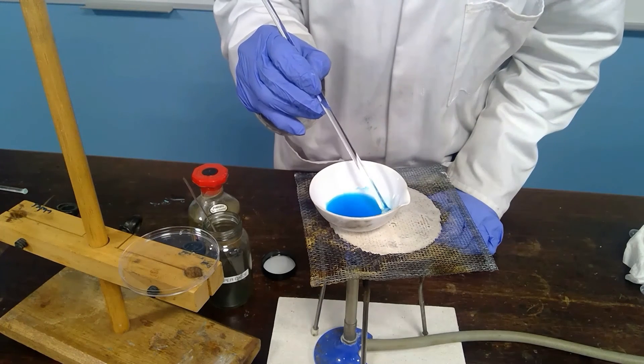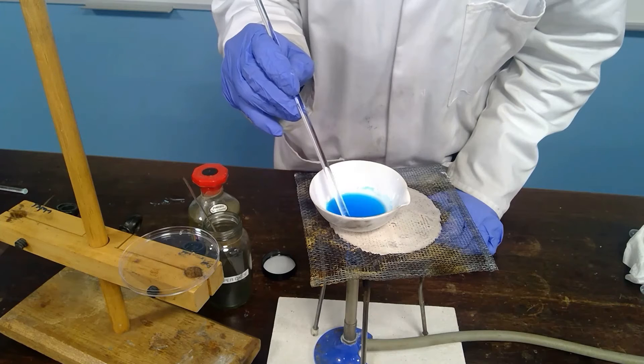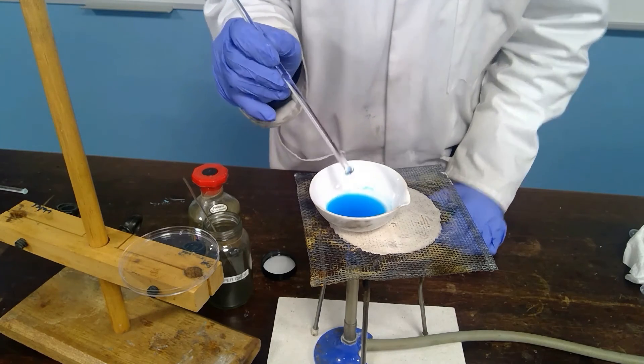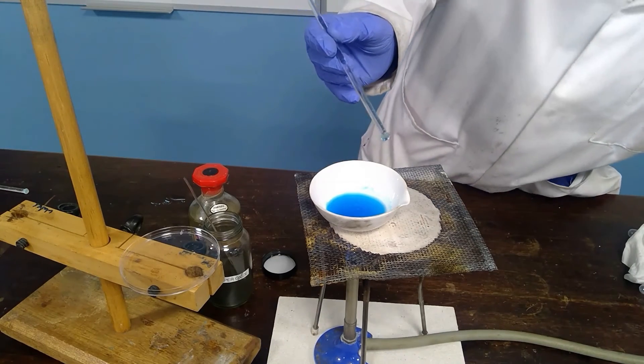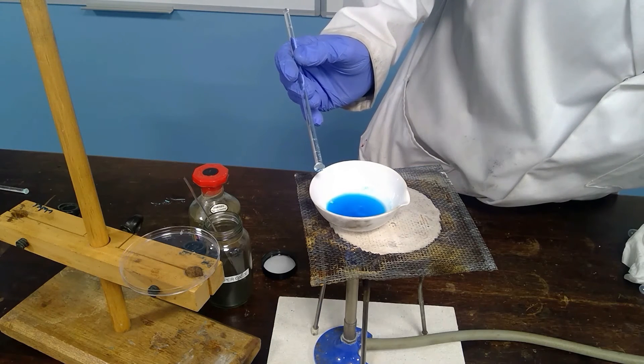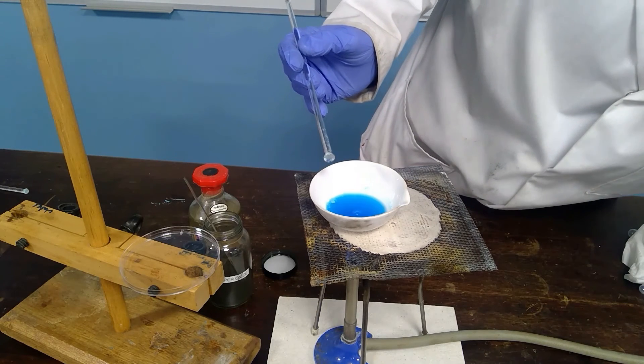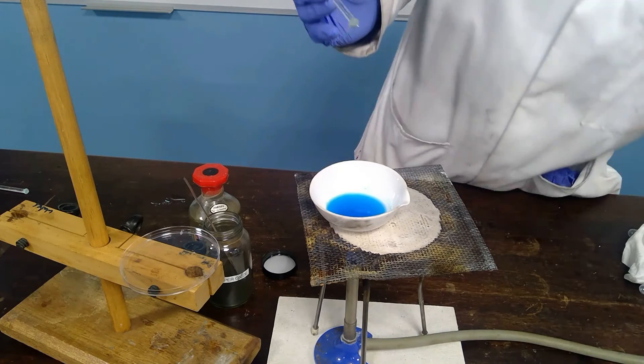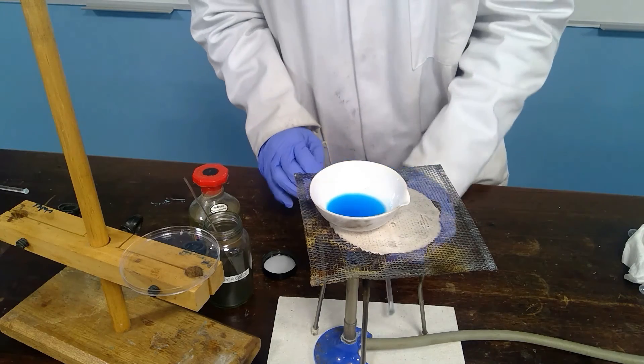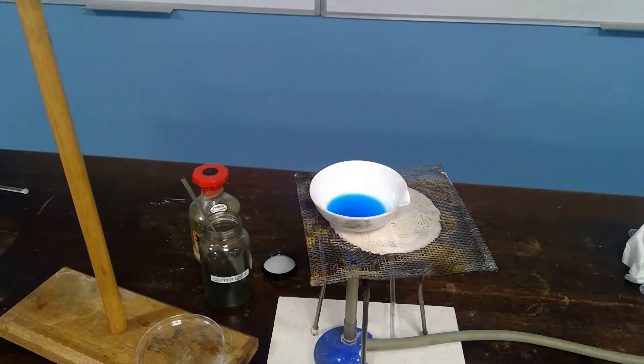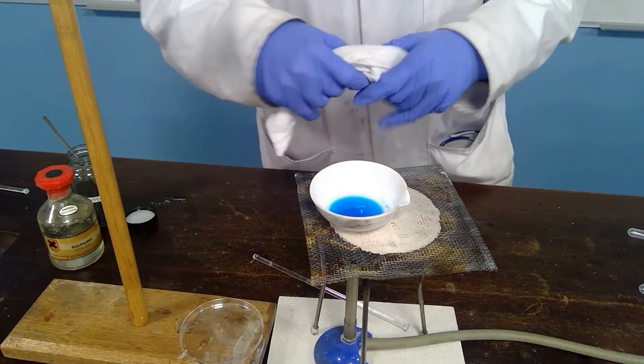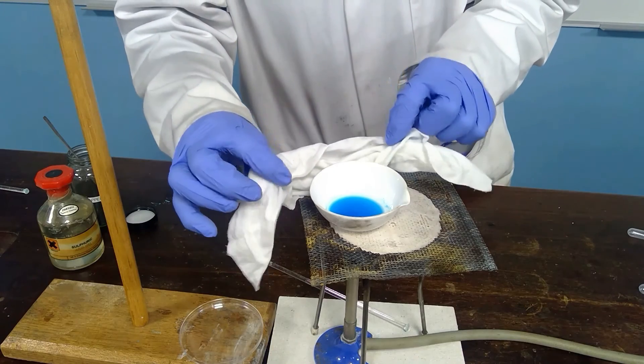As you can see around the edges, there's some signs of both blue but also definitely some white or near white anhydrous copper sulfate. So we've got it boiling now so I will again turn the Bunsen down to very low heat and just allow that to boil for a few minutes. So at this point we will transfer across to the petri dish.